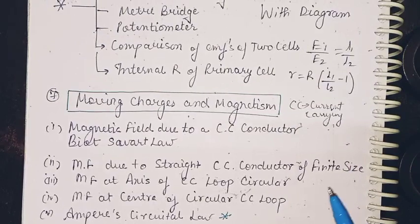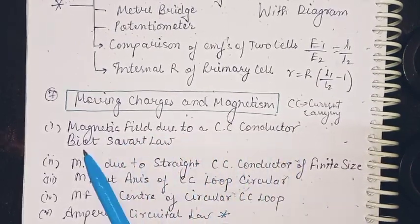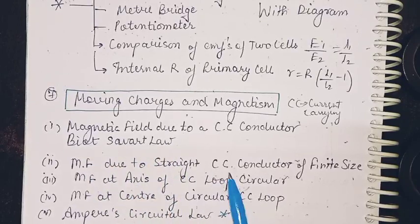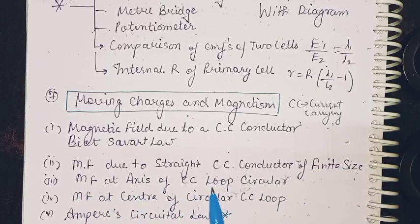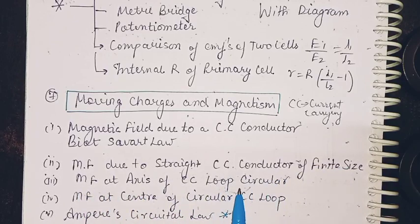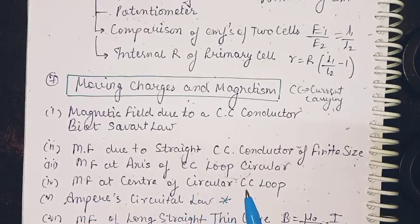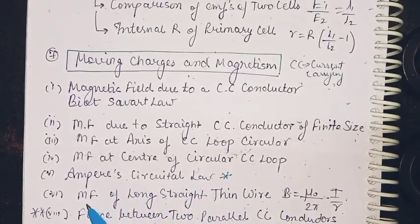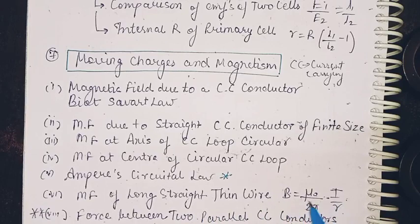Moving charges and magnetism: magnetic field due to current carrying conductor, that is Biot-Savart law. Then magnetic field due to straight current carrying conductor of finite size. Magnetic field at axis of current carrying circular loop. Magnetic field at center of circular current carrying loop. Ampere's circular law - this is really important. Magnetic field of long straight thin wire: B equals mu0 divided by 2pi into I by R.